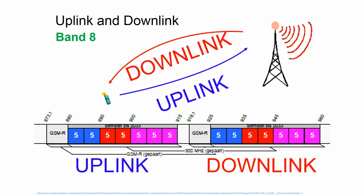Your device also needs to send something back to the base station — this is the uplink. In Europe, different frequencies are used: for example in GSM 900, the base station sends in an upper frequency range, and the device sends back in a lower frequency range, also called uplink and downlink.